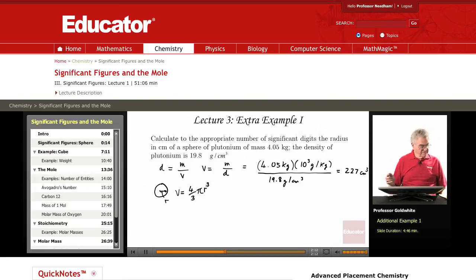Therefore, r is the cube root of 3 times the volume divided by 4 times pi.